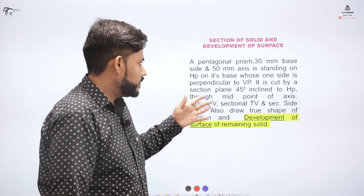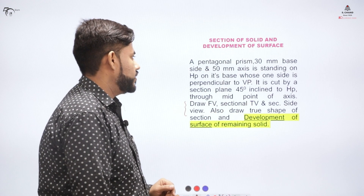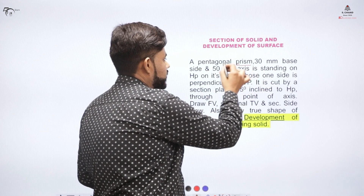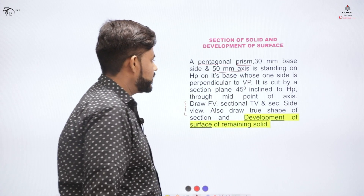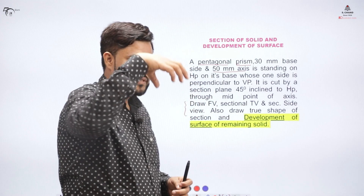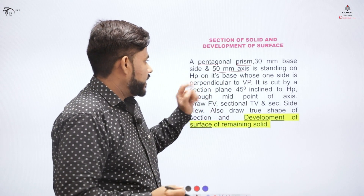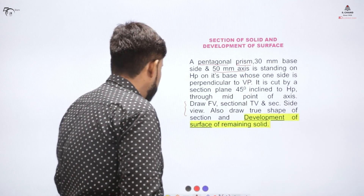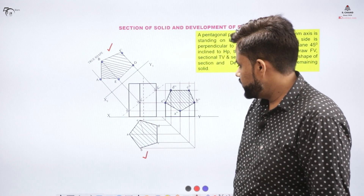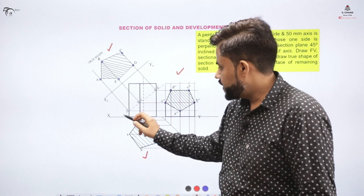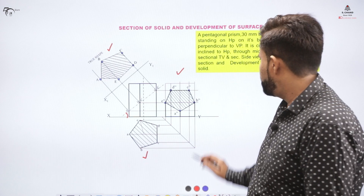We will learn this concept in detail using the same problem from the first part of the video. The problem involves a pentagonal prism with a 30 mm base and 50 mm axis, standing on the horizontal plane. Looking from the top gives the pentagon, and from the front gives a rectangle. In the first part we found the true shape and the sectional views when the section was inclined at 45° to the base.